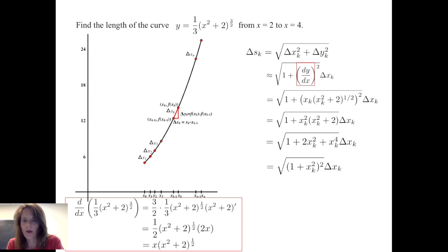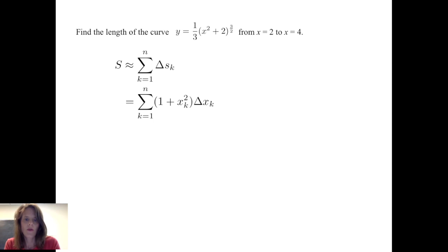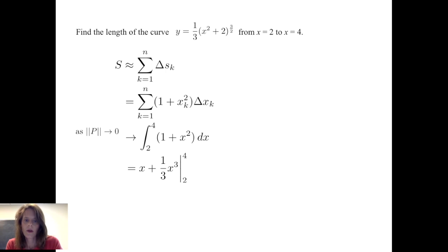Under the radical, we have a perfect square: √((1 + x_k²)²) · Δx_k, so Δs_k ≈ (1 + x_k²) · Δx_k. That's the length of the k-th piece. To find the total arc length on [2, 4], we sum from k = 1 to n of (1 + x_k²) Δx_k and take the limit as the norm of the partition goes to zero, giving the definite integral from 2 to 4 of (1 + x²) dx. Integrating, we get [x + ⅓x³] from 2 to 4, which equals 62/3 units.